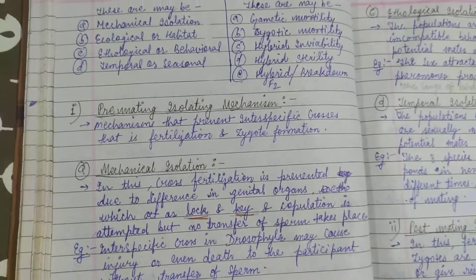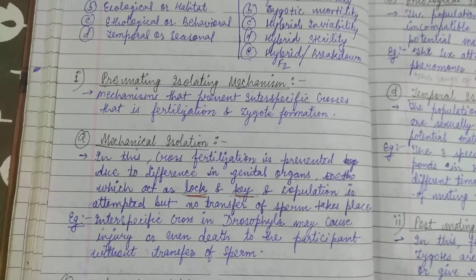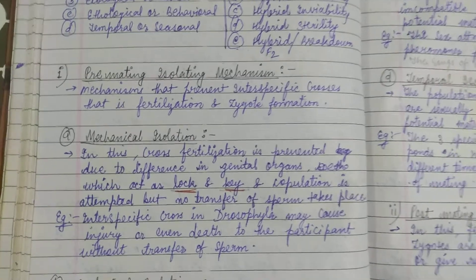Starting from the pre-mating isolating mechanism, which operates prior to fertilization. The mechanism prevents inter-specific crosses — that is, fertilization and zygote formation.